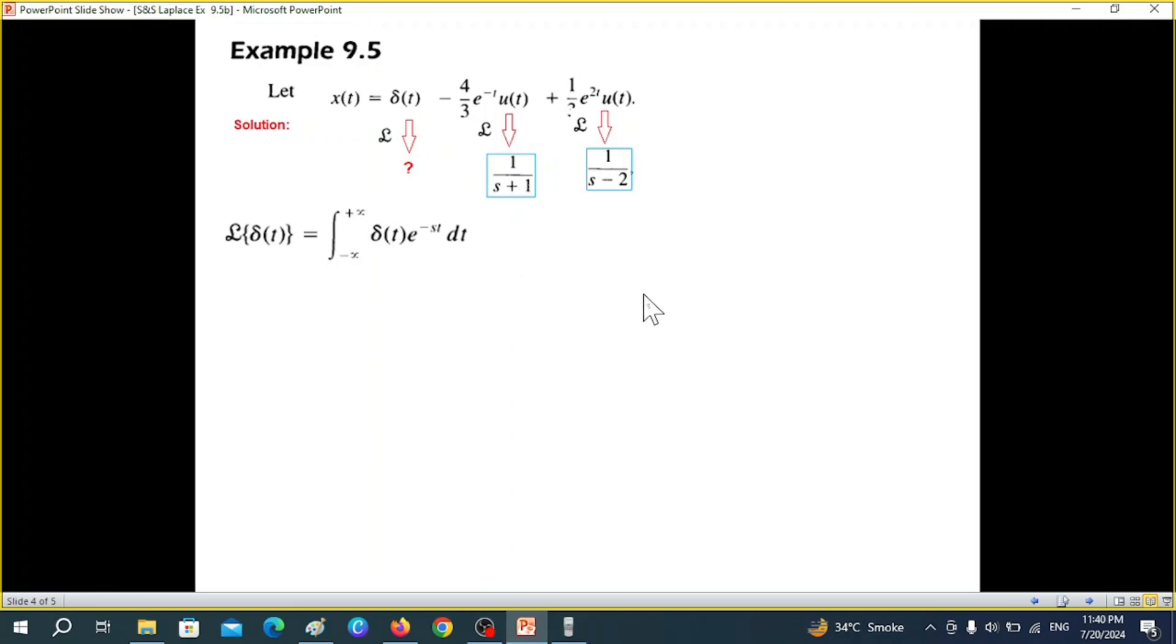Now what is delta t? If you see this diagram, delta t is a function which is called impulse function, also called delta function. Its value at zero time is infinite and overall area is equal to one. At all other places its value is zero.